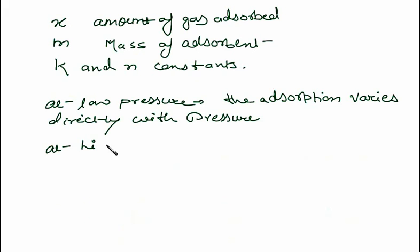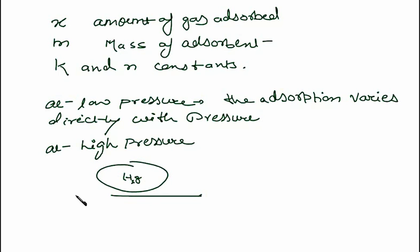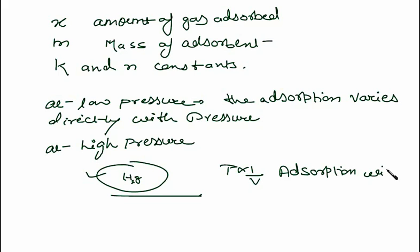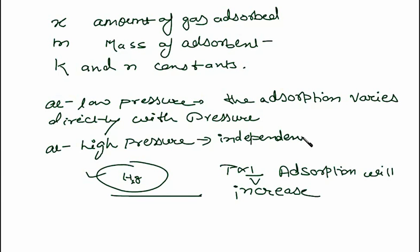At high pressure, what will happen? Say I have taken a platinum surface and I am trying to adsorb hydrogen gas over it. At low pressure, if I increase the pressure of hydrogen, adsorption will increase — in order to decrease the volume. But at high pressure, if we keep increasing pressure, adsorption cannot keep increasing indefinitely. At high pressure, adsorption becomes independent of pressure, or it attains a steady state.